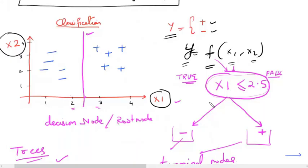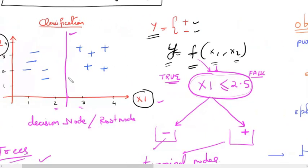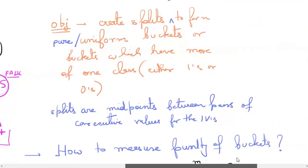As we have seen in a previous video, the decision tree tries to separate the two classes by taking a decision right somewhere in the middle. It tries to split the data in such a way that the two buckets created are entirely consistent of one of the classes. This is the goal of a decision tree — to separate the pluses from the minuses as much as possible.